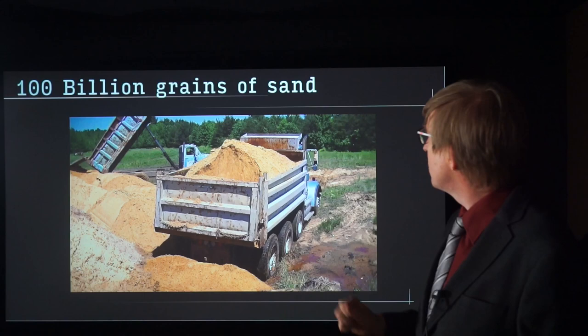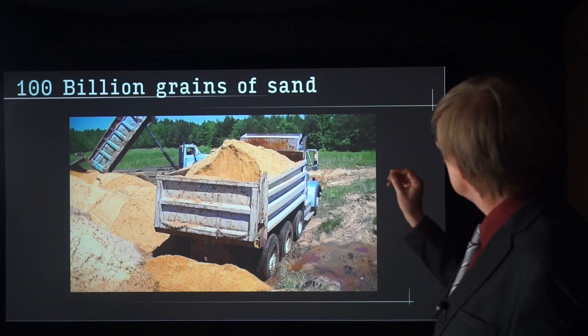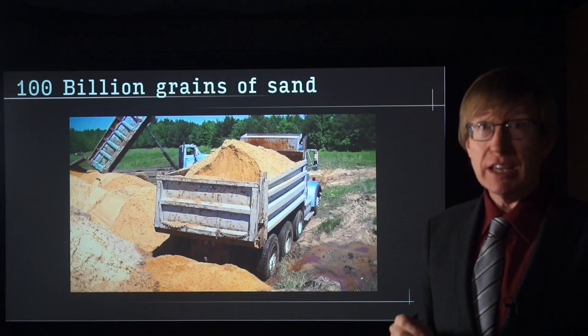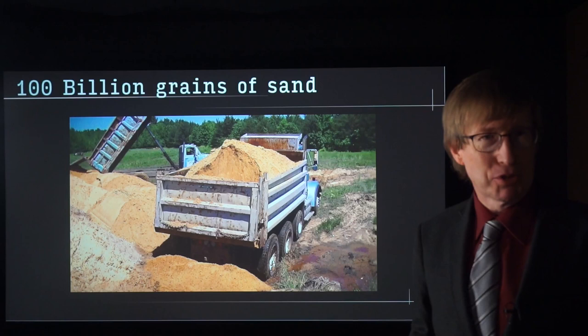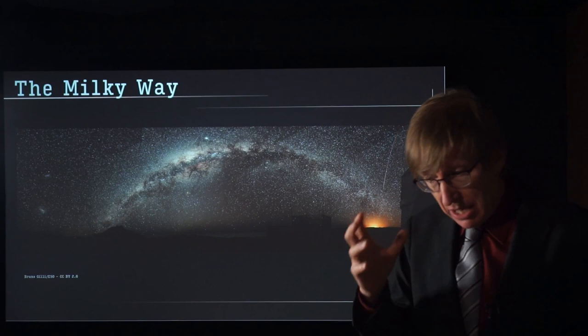Here we have a dump truck — not the pile, but in the dump truck itself, we have 100 billion grains of sand. The number of grains of sand in this dump truck is about the number of stars in a galaxy. When you think about the Milky Way galaxy, how many stars are there? There are as many stars as grains of sand in the dump truck. Absolutely unbelievable.